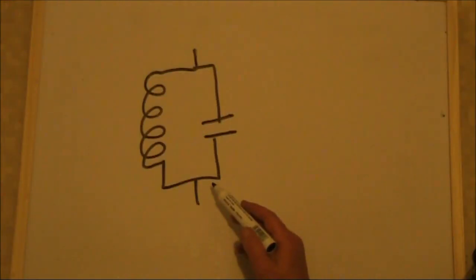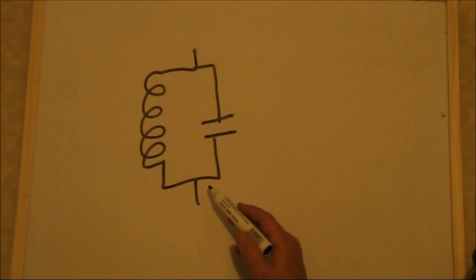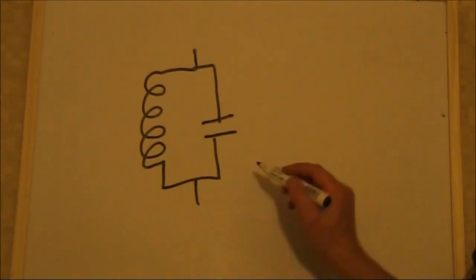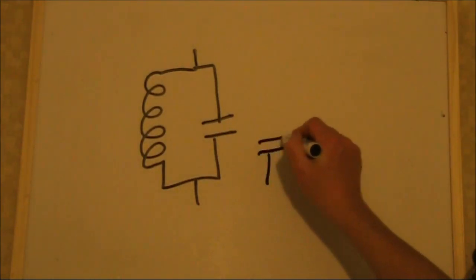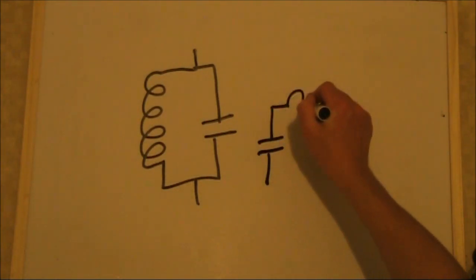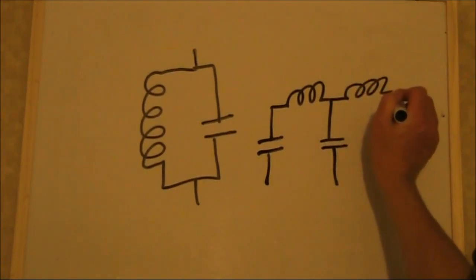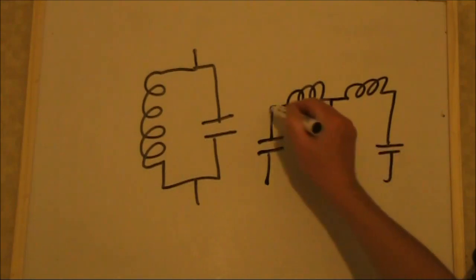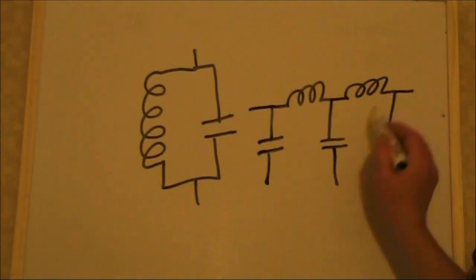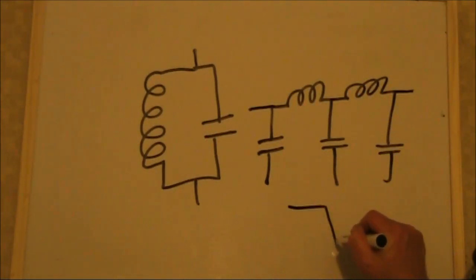An example is this parallel tuned circuit. You might see something like this if you are looking at a circuit diagram for the front end of a receiver. That provides some selectivity and rejects unwanted signals. Or in a transmitter you might have another type of tuned circuit or filter, and that is a low pass filter. Its purpose is to pass signals below a particular frequency and reject those above.